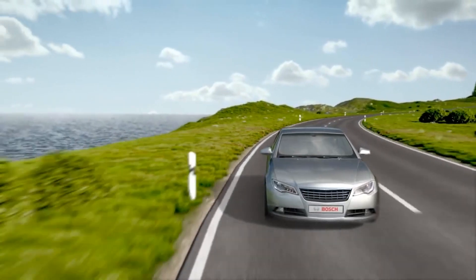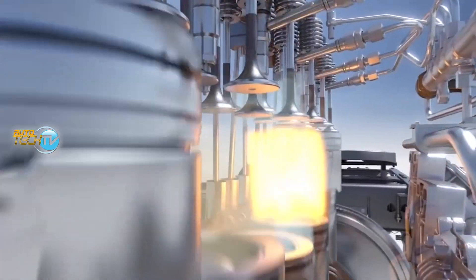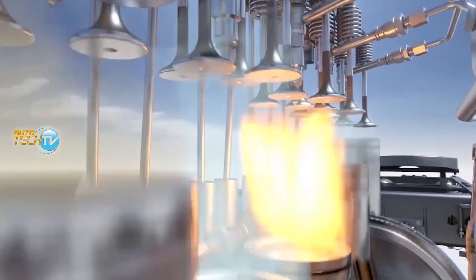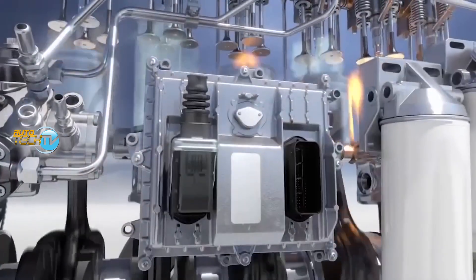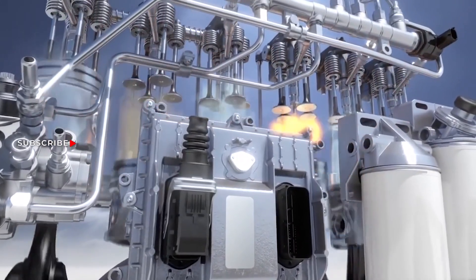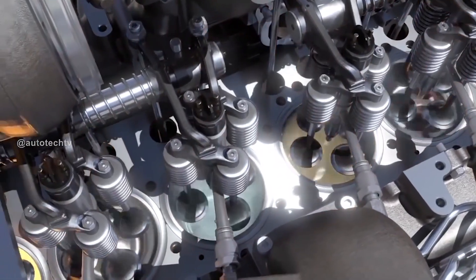Almost all diesel engines today use an injection system known as common rail. Common rail basically means common duct. It's a duct that distributes fuel to all the injectors and keeps the pressure inside the duct constant so that there are no fluctuations and the pressure at which it's injected is exactly the same at all times.